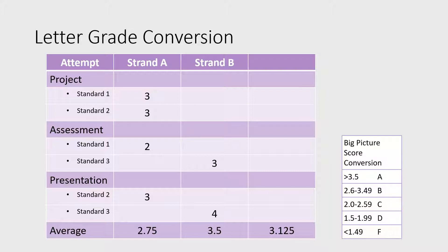The scores for the standards within a strand are averaged to determine proficiency in that group of skills. The strand totals are then averaged together to determine an overall proficiency level, and that number is converted to a letter grade with the Big Picture score conversion table.